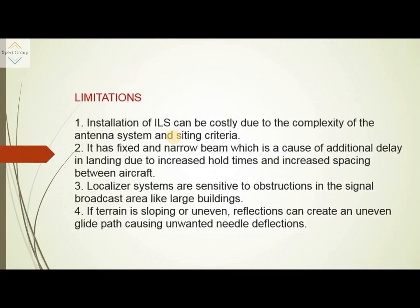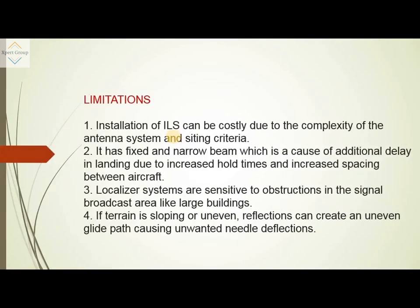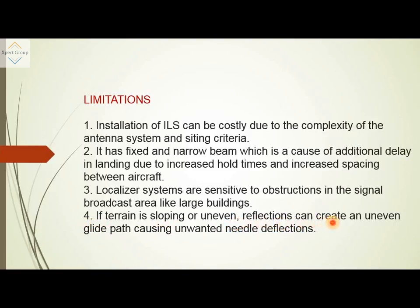Now we will look at the limitations of the instrument landing system. ILS is a very costly system that requires a large siting area as well as larger antennas. It has a fixed and narrow beam, which causes additional delay in landing due to increased hold time and spacing between aircraft. Localizer systems are sensitive to obstructions in the signal broadcast area, such as buildings. If the terrain is sloping and uneven, reflections can cause an uneven glide path, resulting in unwanted needle deflections.